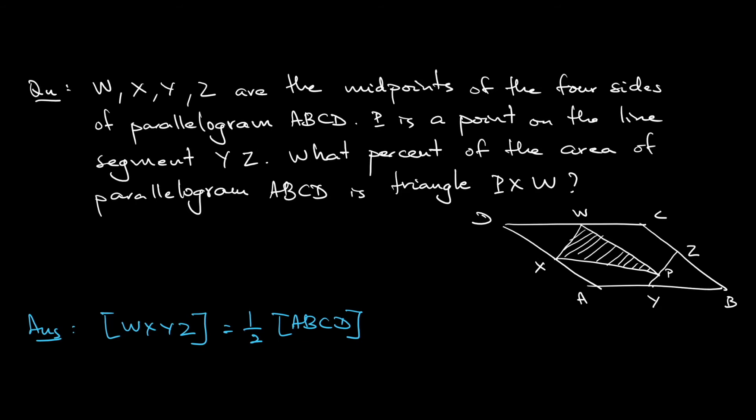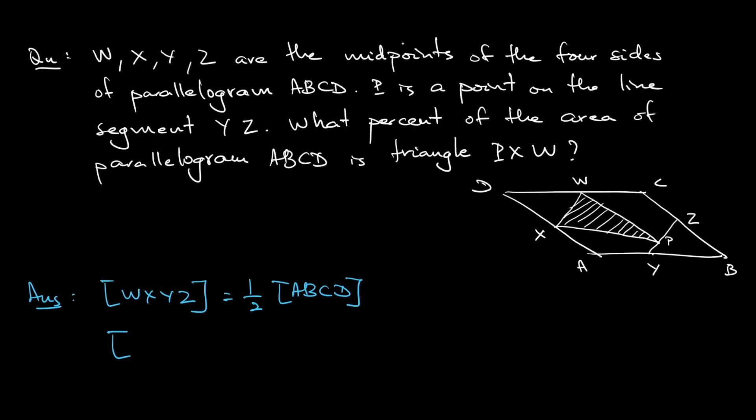Another thing to notice is the area of triangle PXW with respect to the quadrilateral WXYZ. This would be another half, correct? Because WXYZ is in fact another parallelogram. So if you take XW as the base and P as the another vertex, this area would be half of the parallelogram.